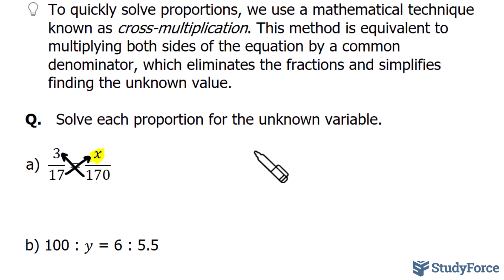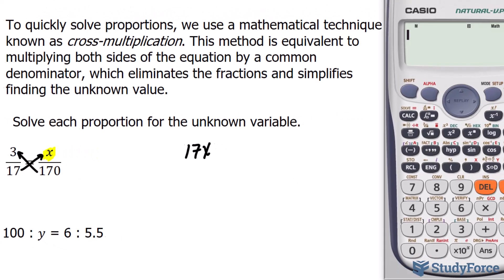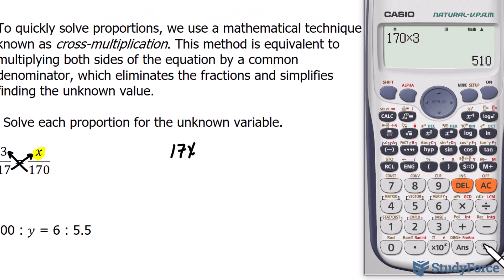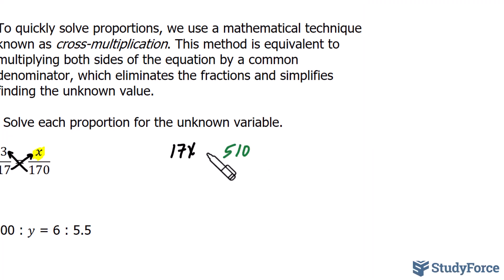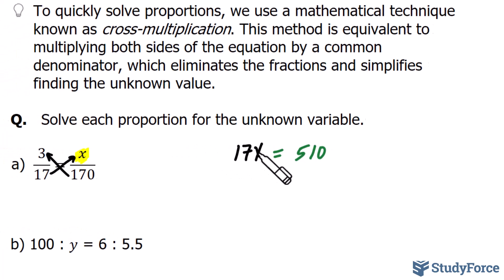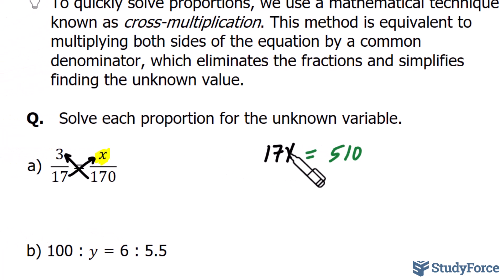So 17 times x makes 17x. And 170 times 3, if we use our calculator, gives 510. And we write this value next to 17x with an equal sign in between. As you can see, by applying cross-multiplication, we've converted this proportion that was in fraction form into an equation that's easily solvable. So to solve for x, we divide both sides of the equation by 17.